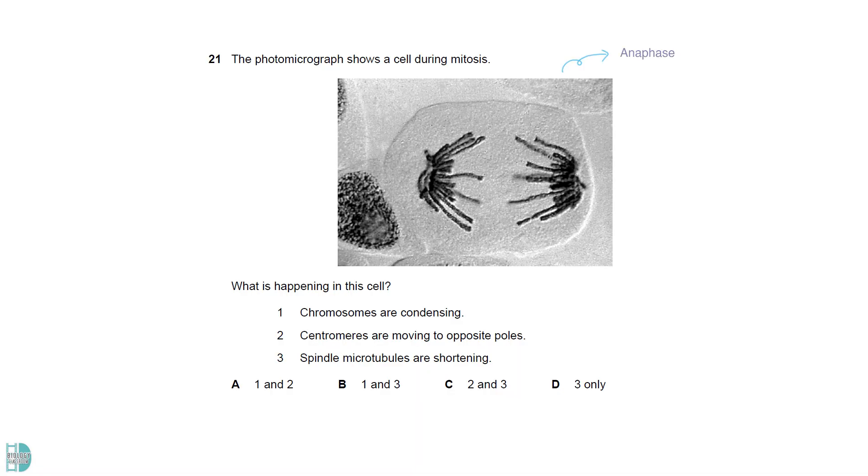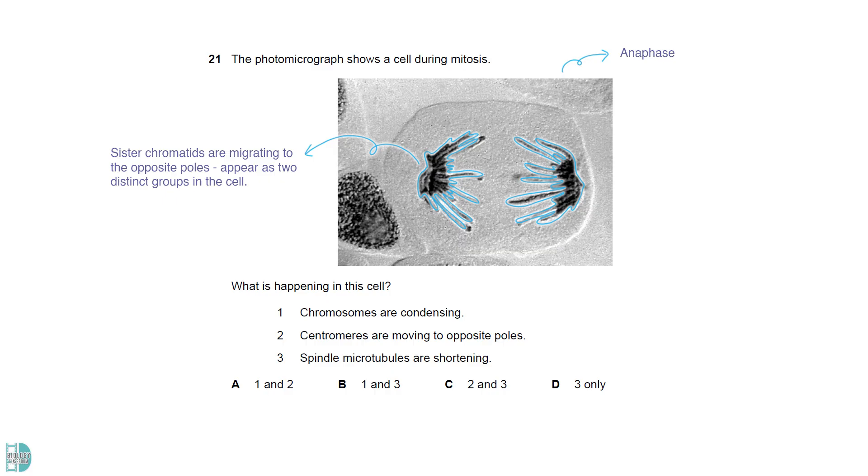The photomicrograph shows a cell in anaphase. The sister chromatids are migrating to the opposite poles, hence the appearance of two distinct groups in the cell. The condensation of chromosomes should already take place in prophase. Their centromeres duplicate and lead the movement, as this is the part attached to the spindle fibers. Spindle microtubules are shortening to pull the sister chromatids apart.